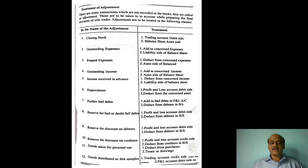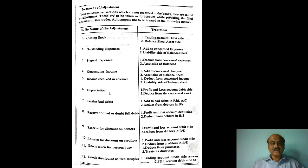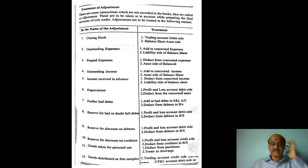Income received in advance — for example, interest received in advance — is deducted from the concerned income. It is a liability and is shown on the liability side of the balance sheet. Next, depreciation: depreciation is the decrease in the value of an asset due to wear and tear. It is shown on the debit side of the profit and loss account.